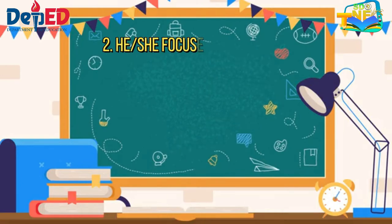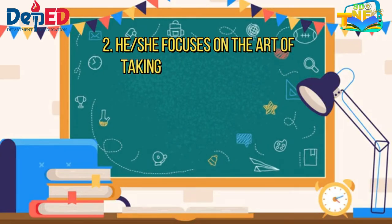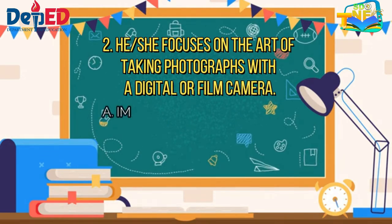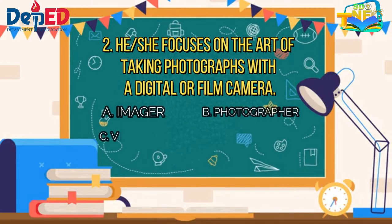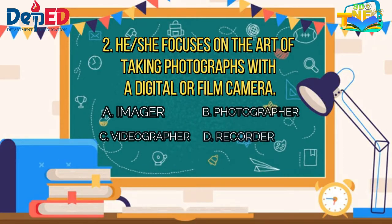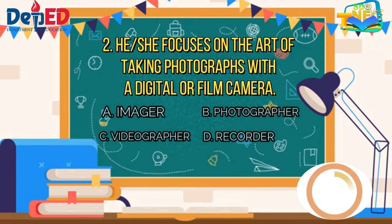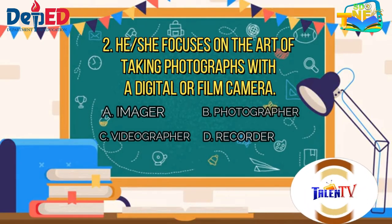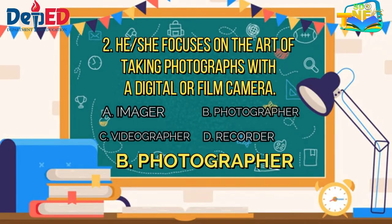Number 2: He or she focuses on the art of taking photographs with a digital or film camera. A. imager, B. photographer, C. videographer, D. recorder. The correct answer is letter B — photographer.